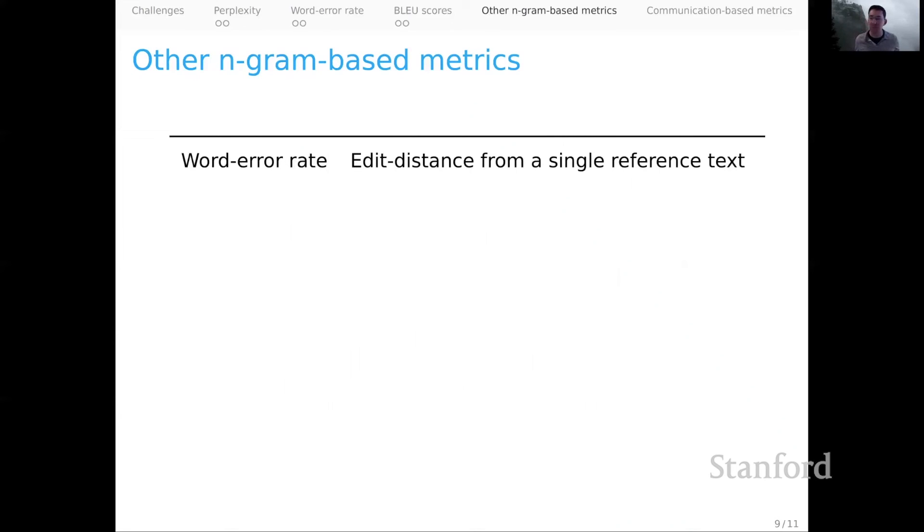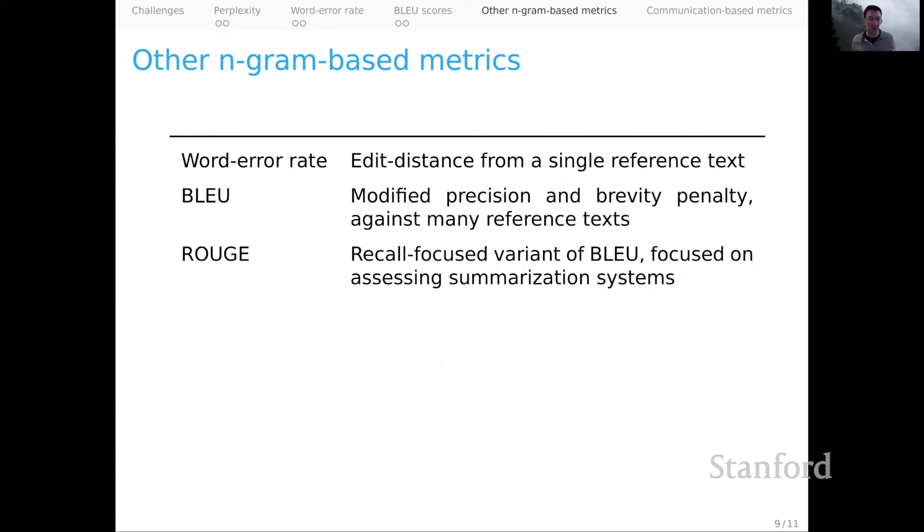That's just a sample of two n-gram based metrics. I thought I'd mention a few more to give you a framework for making some comparisons. So I mentioned the word error rate. That's fundamentally edit distance from a single reference text. BLEU, as we've seen, is modified precision and a brevity penalty kind of recall notion comparing against many reference texts. Rouge is a recall-focused variant of BLEU that's focused on assessing summarization systems.